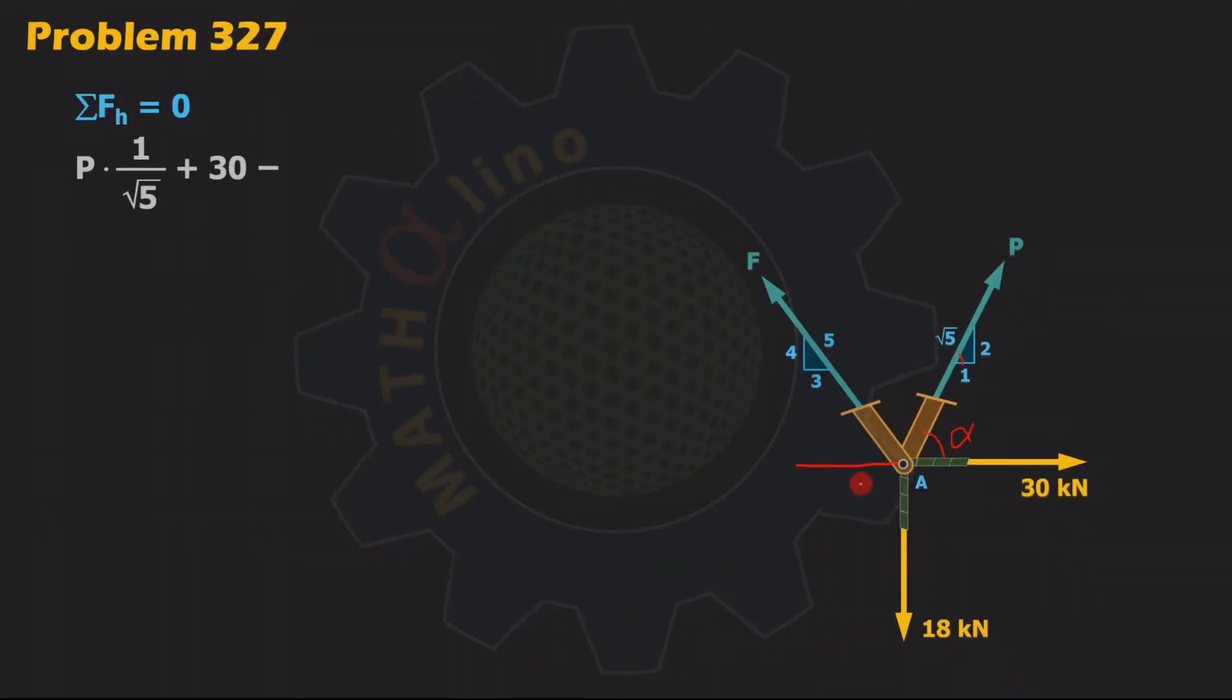There is only one force to the left, and that is the component of this F. Let us call this angle here beta, and this beta is also here. To the left is F cosine of beta, that is for the horizontal component of F. Cosine of beta is adjacent 3 all over the hypotenuse 5, that is 3 fifth.